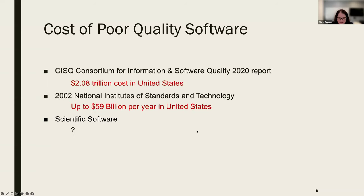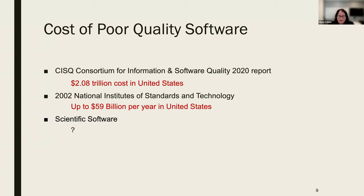We see a lot of this in the general software community. The Consortium for Information and Software Quality has a report every couple of years — from their 2020 report, they quantified the cost of poor software quality in the United States at $2.8 trillion. There's also a well-known study from NIST from 2002, which at that time quantified up to $59 billion per year being lost to poor software quality, and this number is only increasing.